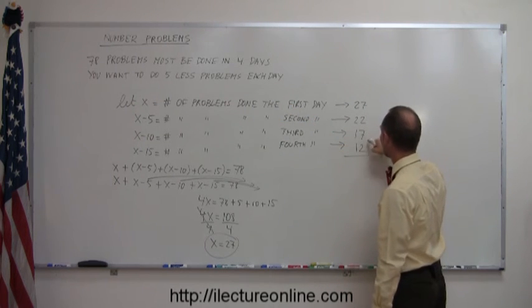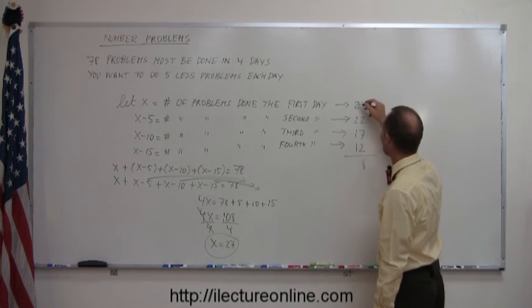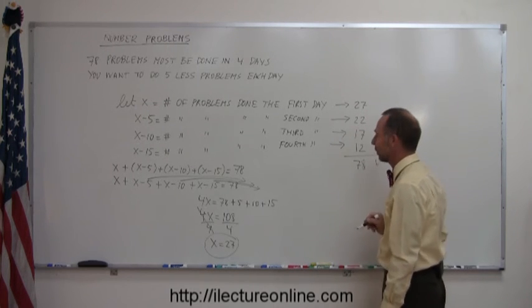So, 7 plus 2 is 9, 16, 18, 8, carry the 1, 3, 5, 6, 7. Ha! Bingo! Correct answer.